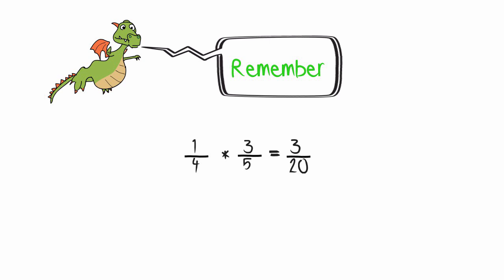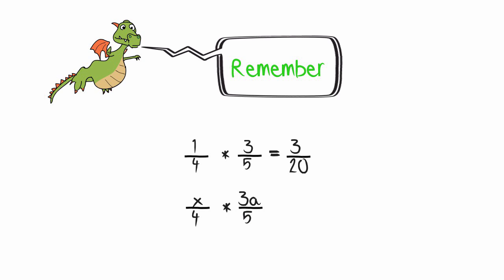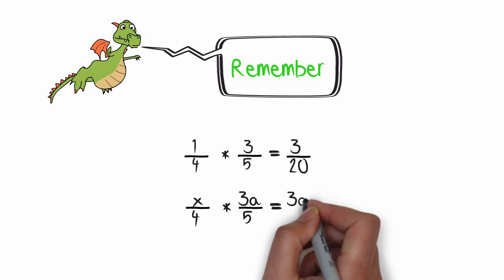When I'm multiplying algebraic fractions, I do the same idea. So my fraction is x over 4 times 3a over 5. x times 3a is 3ax. 4 times 5 is 20.